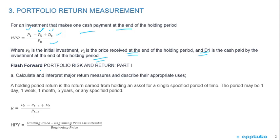This is important because if we flash forward to portfolio risk and return part one, you can see that we also have to calculate and interpret major return measures and describe their appropriate uses. This is typical of the CFA — you learn something in quant, and then you apply it later on in another section, such as corporate finance or the portfolio management section.